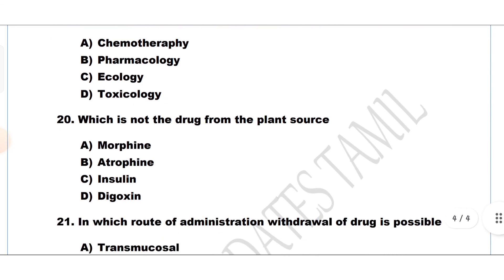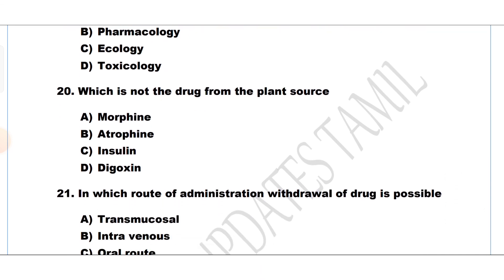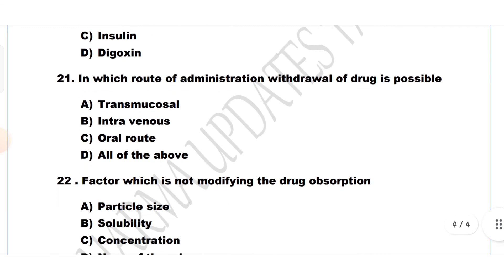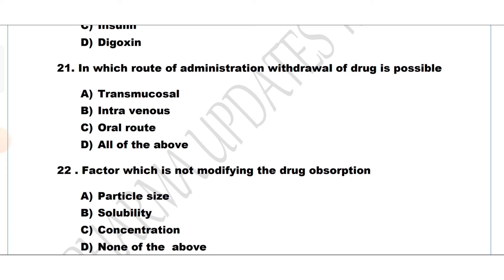Question number 20. Which is not a drug derived from a plant source? Option A: Morphine, Option B: Aporphine, Option C: Insulin, Option D: Colchicine. The answer is Option C, insulin. Question number 21. In which route of administration is withdrawal of drug possible? Option A: Transmucosal, Option B: Intravenous, Option C: Oral, Option D: All of the above.